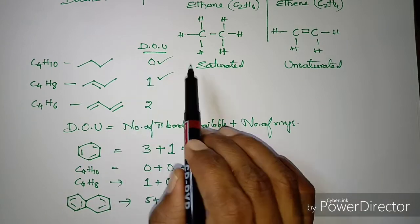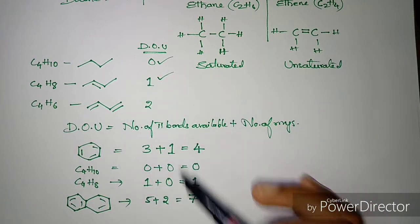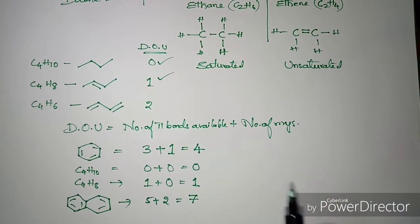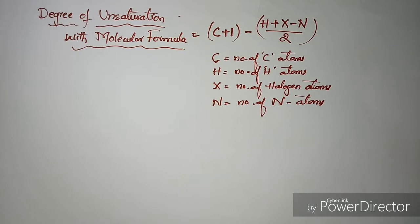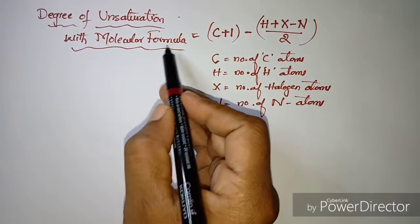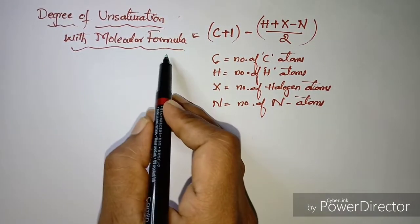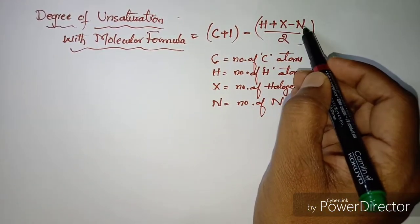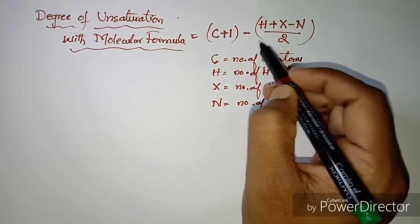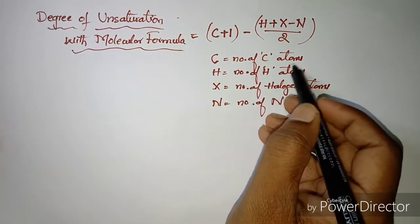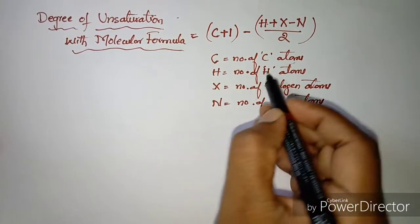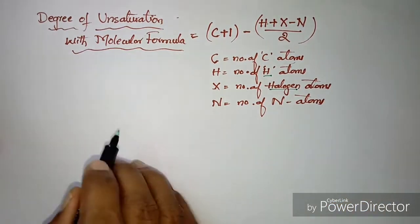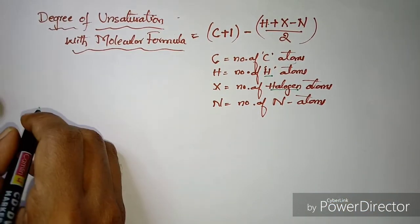This is how we calculate the degree of unsaturation based on structures. Now let's check out how to calculate degree of unsaturation based on molecular formula. The formula is: (C + 1 − H + X − N) / 2, where C represents number of carbon atoms, H represents number of hydrogen atoms, X represents halogen atoms, and N represents nitrogen atoms.